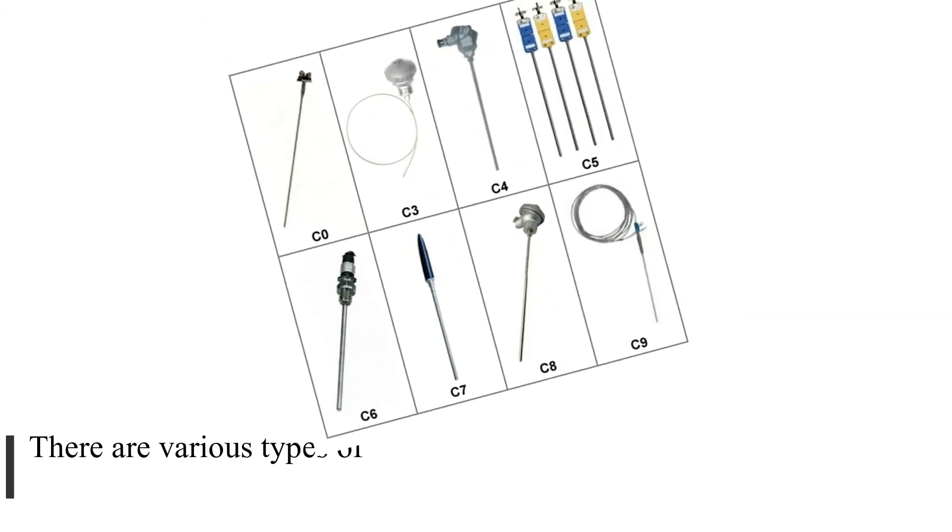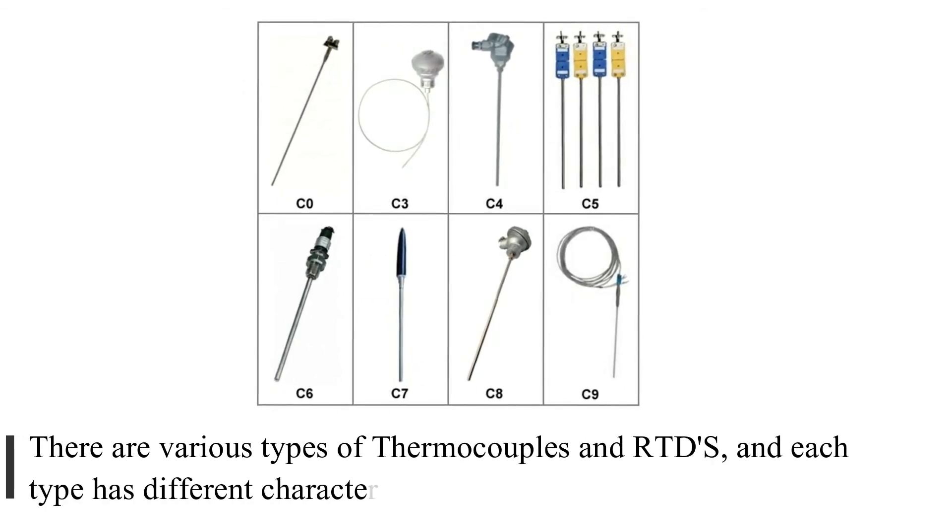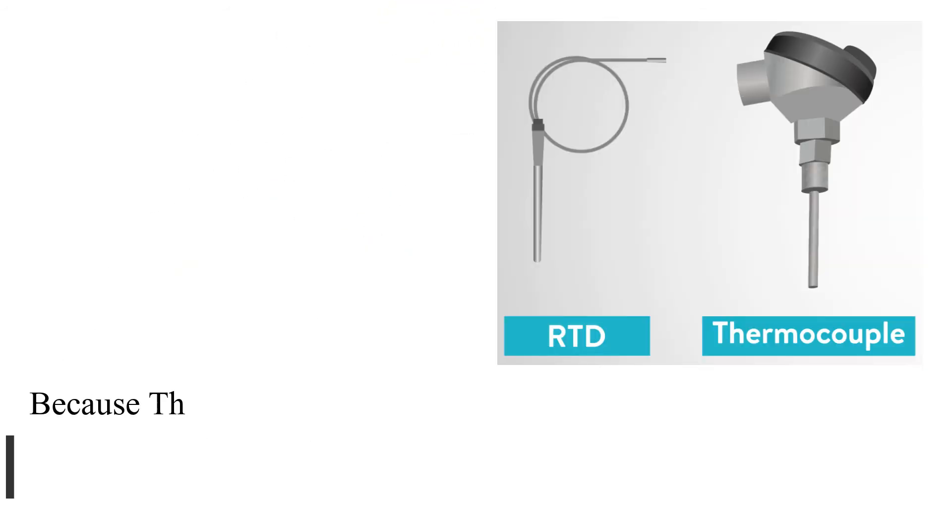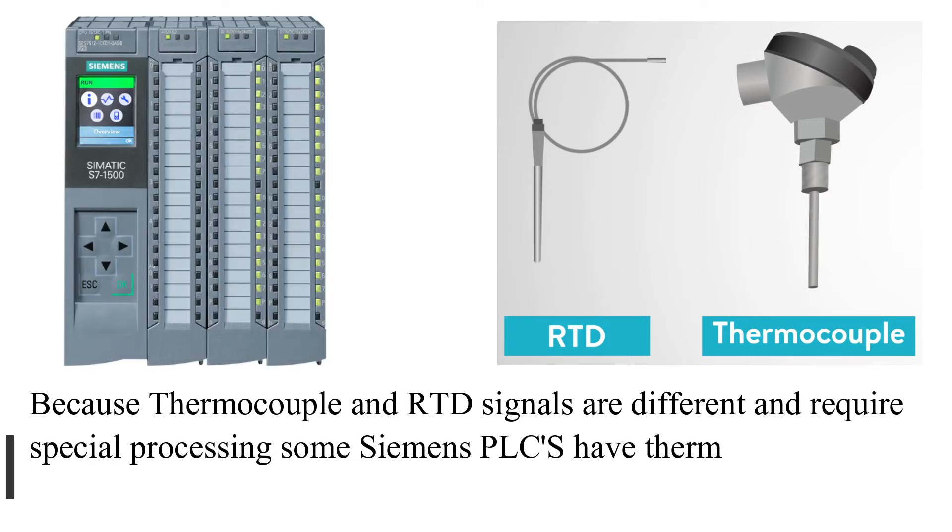There are various types of thermocouples and RTDs, and each type has different characteristics that determine its application range. Because thermocouple and RTD signals are different and require special processing, some Siemens PLCs have thermocouple and RTD signal modules.